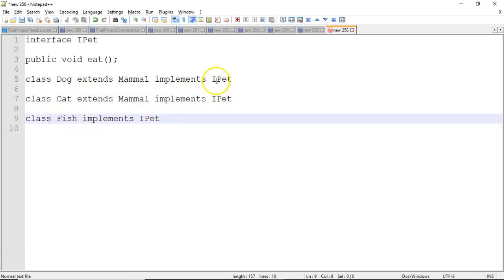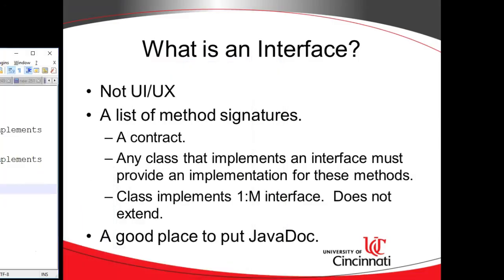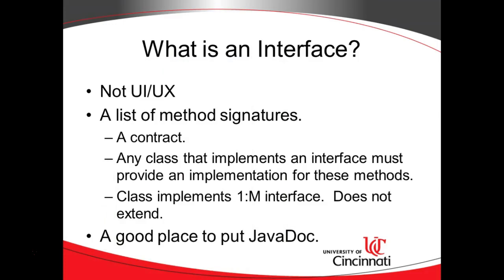The class Fish needs an eat method too, because all three implement the interface iPet. An interface is like a contract, because any class that implements it has to provide some behavior for these methods. One nice thing about interfaces is that a class can implement multiple interfaces — all it's saying is I agree to provide behavior for any methods defined on the interface. If more than one interface defines the same method, no problem — the class only has to implement it one time.